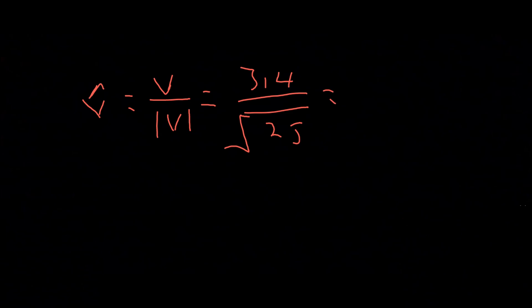So the unit vector is: 3 over 5 i plus 4 over 5 j. The radical in the denominator simplifies to 5, giving us 3/5 i plus 4/5 j as the unit vector.